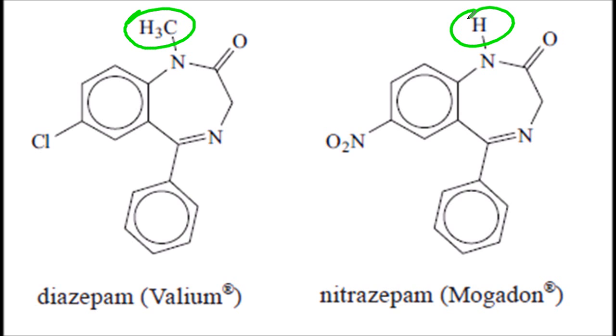So let's compare these two molecules. The methyl group is replaced by hydrogen in Mogadon, and the chloro is replaced by a nitro group, O2N. That's not in the syllabus, so you probably won't be asked about that.